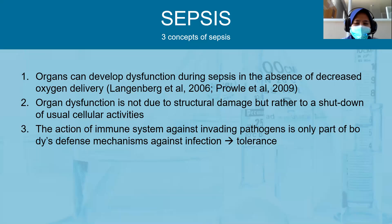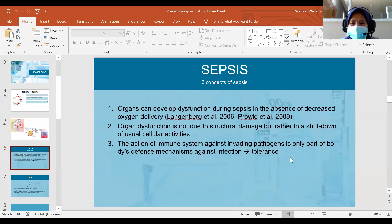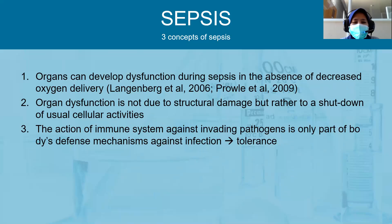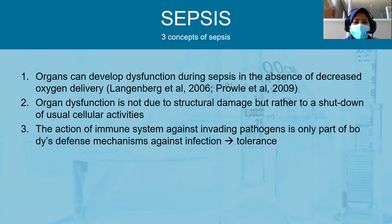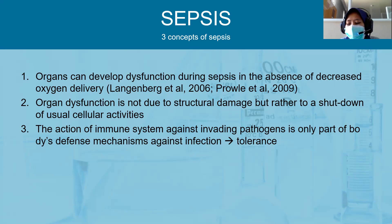There are three concepts of sepsis. The first is that organs can develop dysfunction during sepsis in the absence of decreased oxygen delivery. The second concept is that organ dysfunction is not due to structural damage but rather to a shutdown of usual cellular activities. The last concept is that the action of the immune system against invading pathogens is only part of the body's defense mechanisms — known as tolerance — which limits cellular injury derived from immune or pathogen action, as described in mammals.